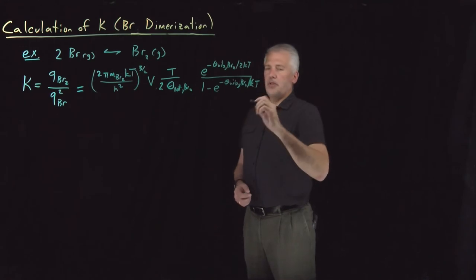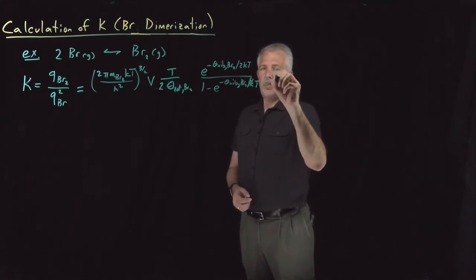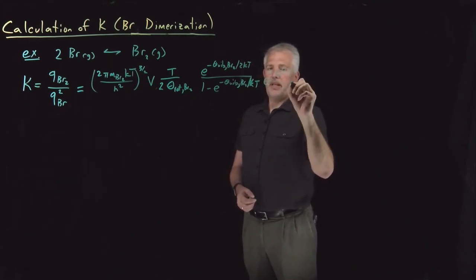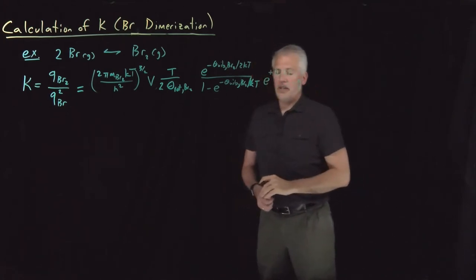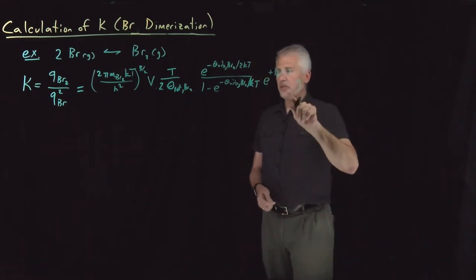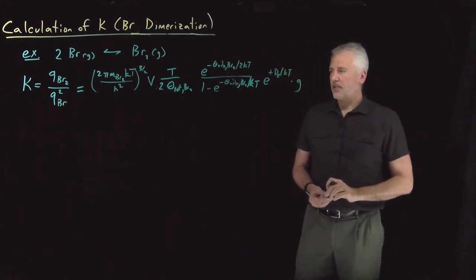That's the vibrational term. I have a bond dissociation energy term, and I have an electronic partition function, which is just 1 for Br₂. That's the numerator.